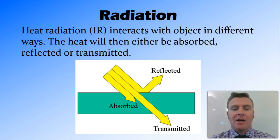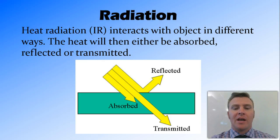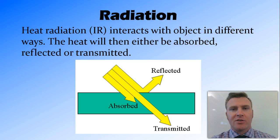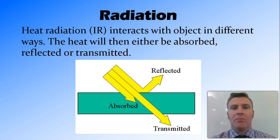Absorbed would be something like a dark colour — if you're in a dark coloured car, it absorbs the heat radiation and gets hot. If you're in a light, shiny car, the heat gets reflected so the car doesn't get as hot. Or if you're standing inside near a window with the sun shining from outside, that heat radiation is being transmitted through the window and you can feel it on your skin. Generally, reflected and transmitted radiation doesn't result in the object heating up too much.